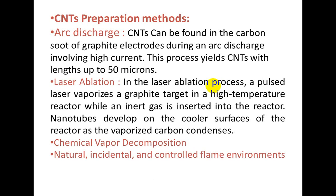Now we come to the CNTs preparation methods — the techniques through which we prepare CNTs. The first is arc discharge, a very important method. CNTs can be found in the carbon soot of graphite electrodes during an arc discharge involving high current. This process yields CNTs with lengths up to 50 microns.